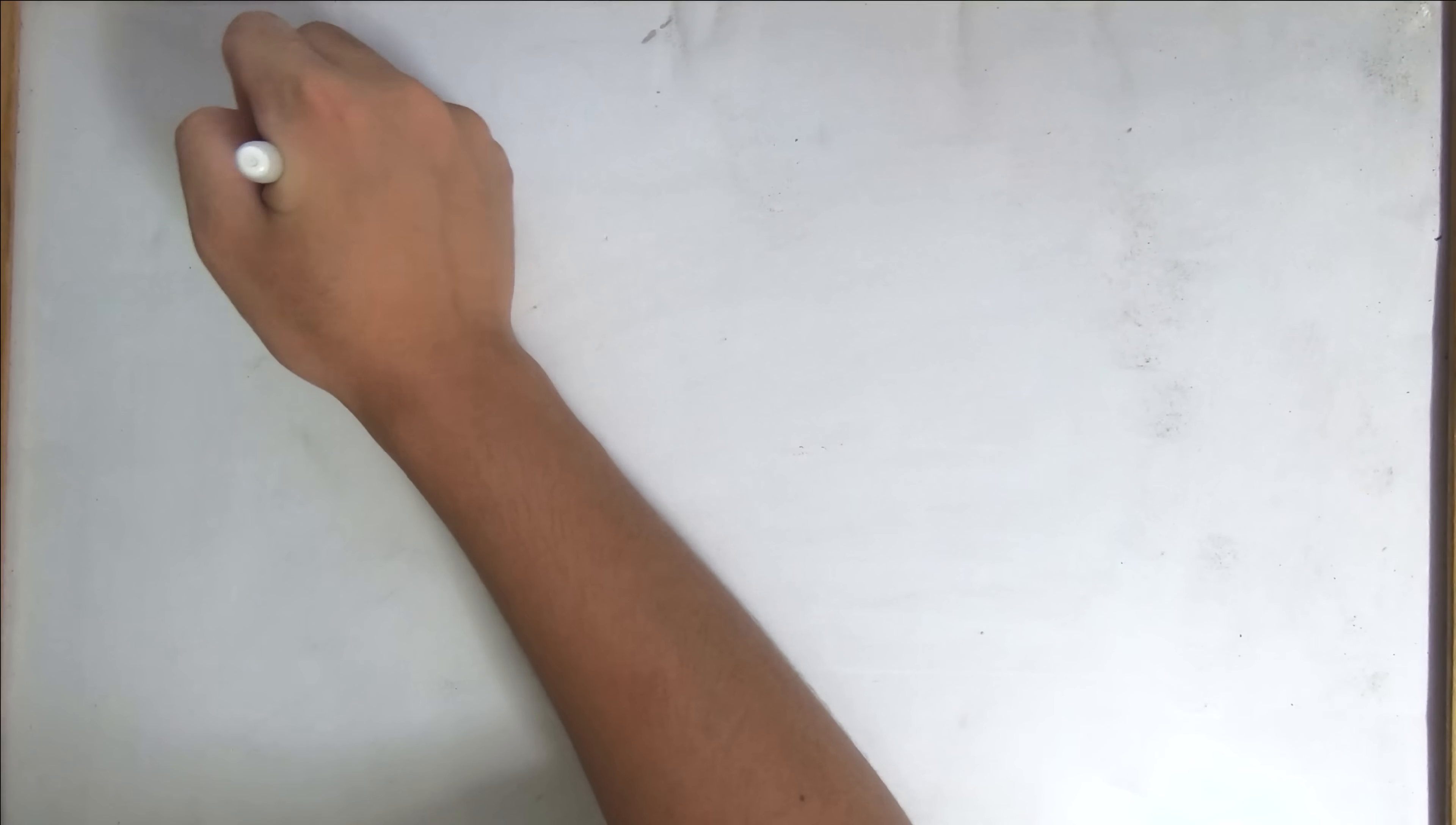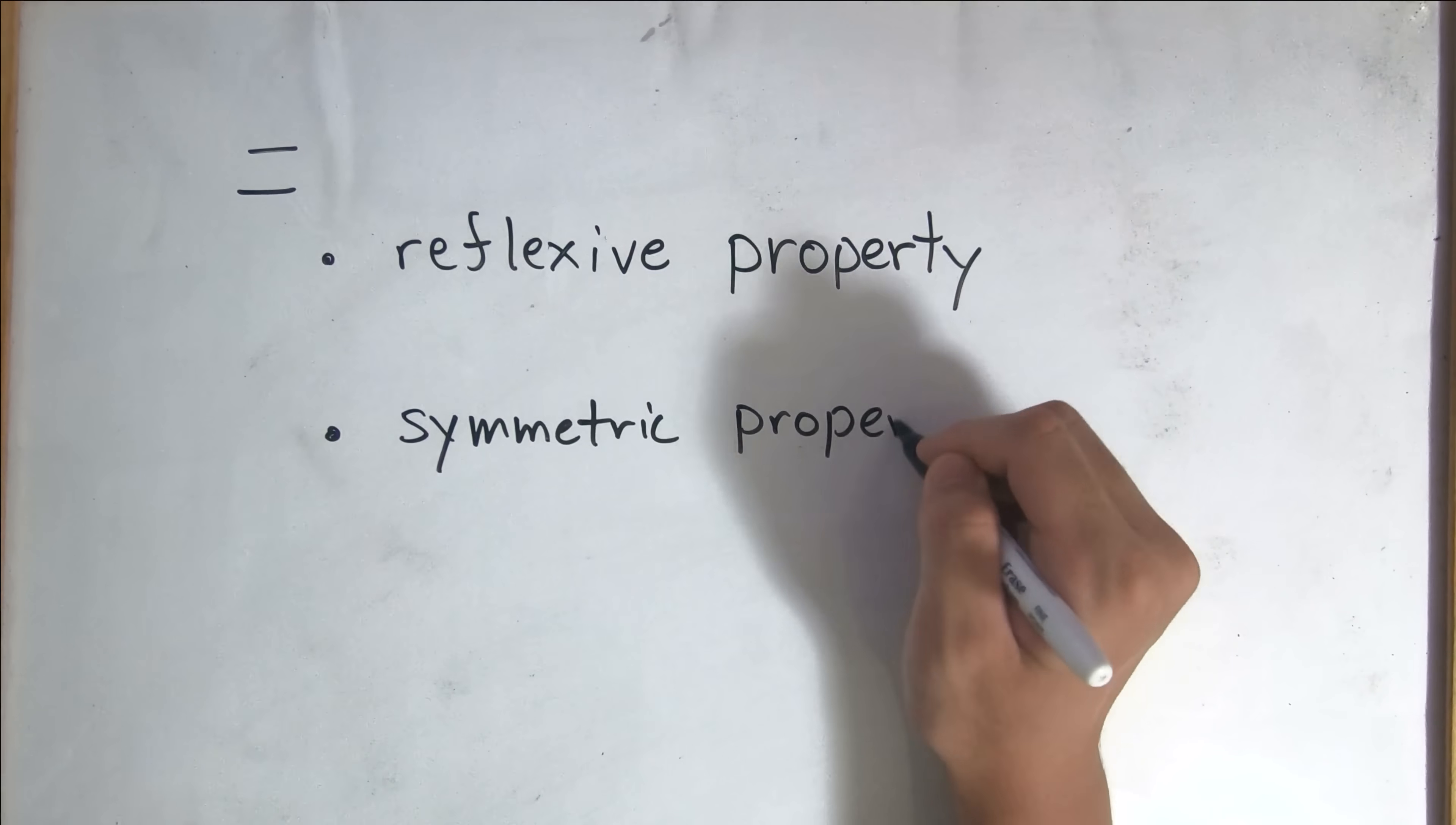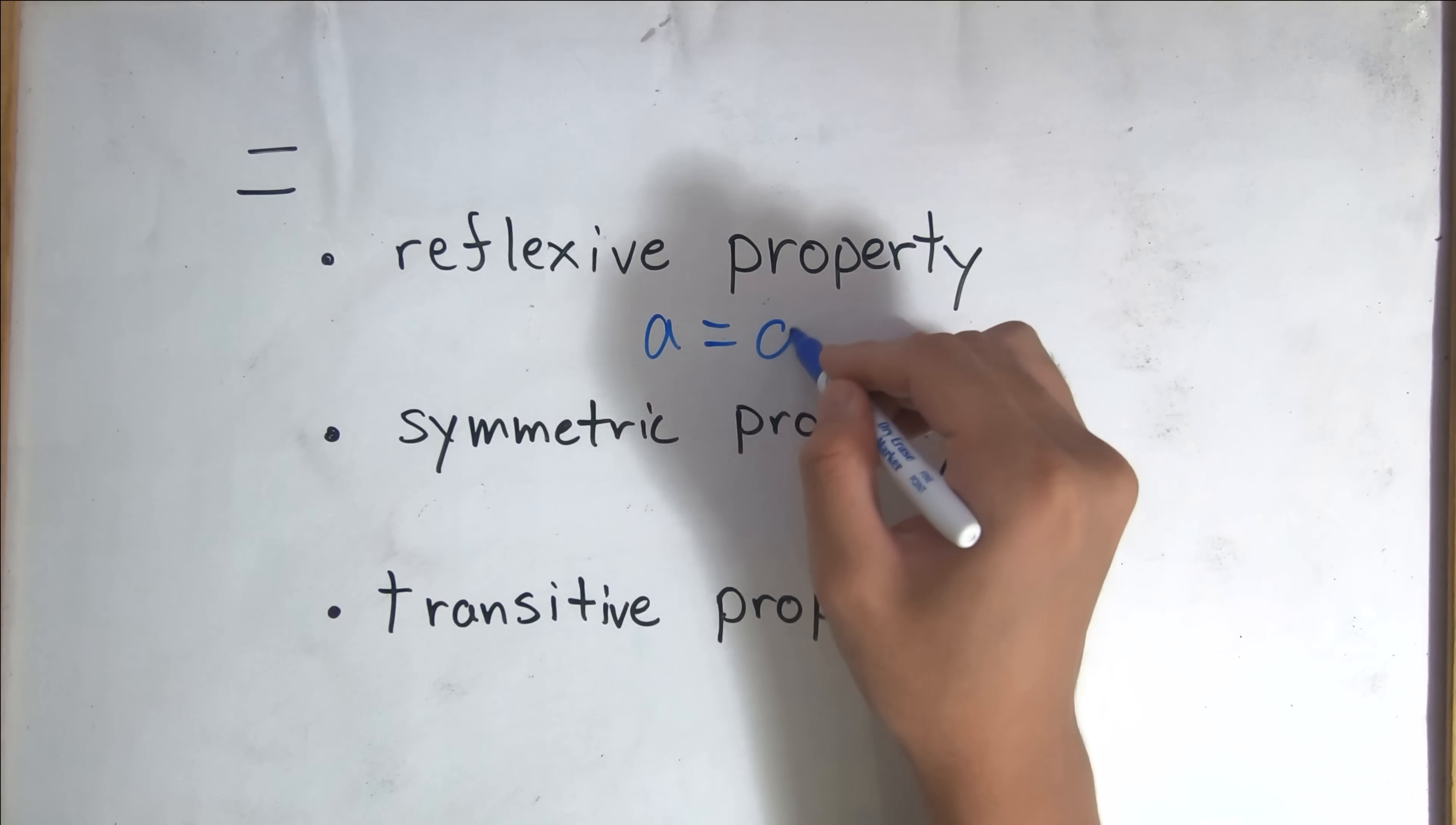Let's start with this equal symbol, equality. There are three properties that this symbol holds. The names for these properties are not that important. First, we have the reflexive property. For any quantity a, a equals a.